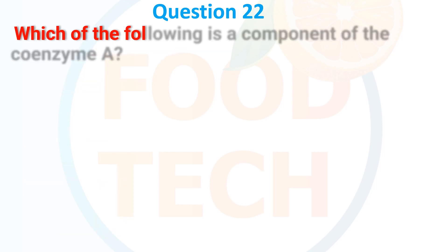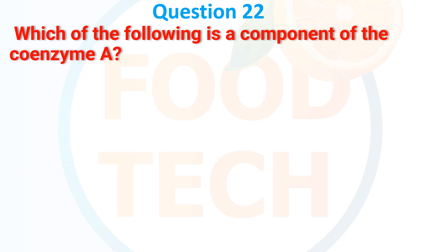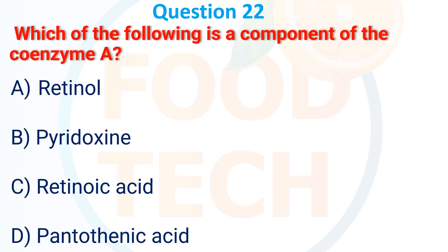Question 22. Which of the following is a component of coenzyme A? A. Retinol. B. Pyridoxine. C. Retinoic acid. D. Pantothenic acid. The correct answer is D: pantothenic acid.